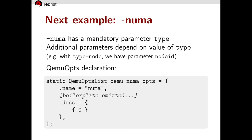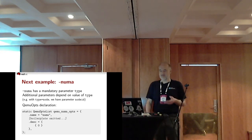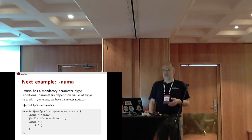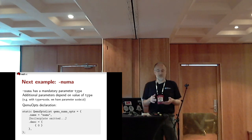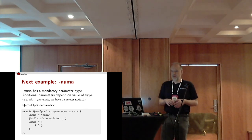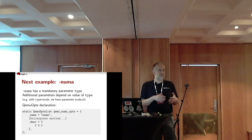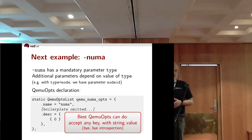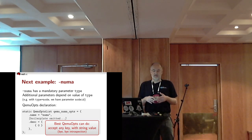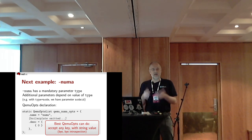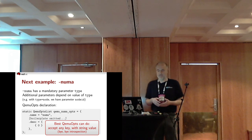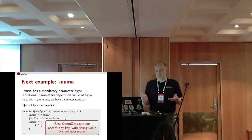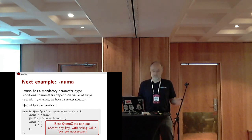Next example: dash-numa. Dash-numa has a mandatory parameter 'type' and additional parameters depending on the value of type. So with type=node there is an additional parameter 'nodeid'. But QEMUopts can't express that. So the best we can do is declare no parameters at all. That leaves checking keys and values entirely to the code using QEMUopts.